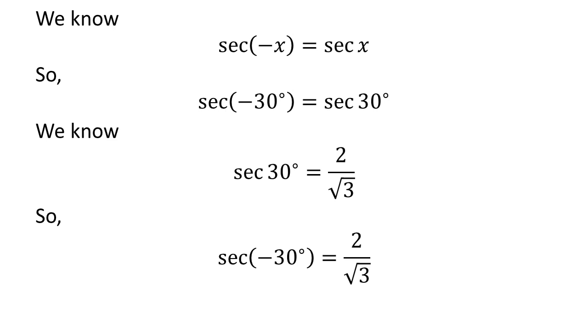So, we get the value of secant of minus 30 degrees is equal to 2 upon square root of 3.